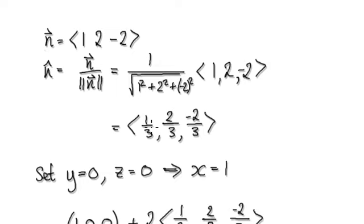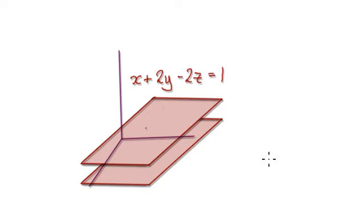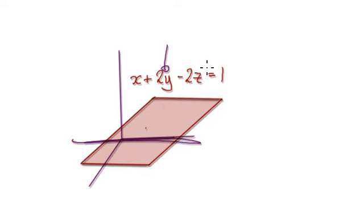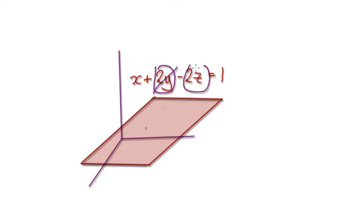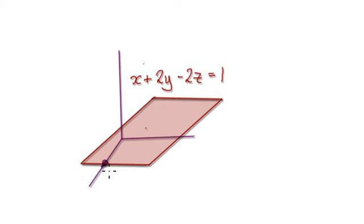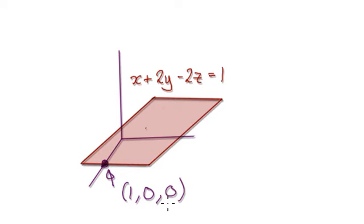We now need to know one particular point on our plane. Let's set y to be 0 and z to be 0. When you set y and z to zero, those terms disappear, so x must equal 1. That means our plane crosses the x-axis at the point (1, 0, 0), so this point is actually on the plane.